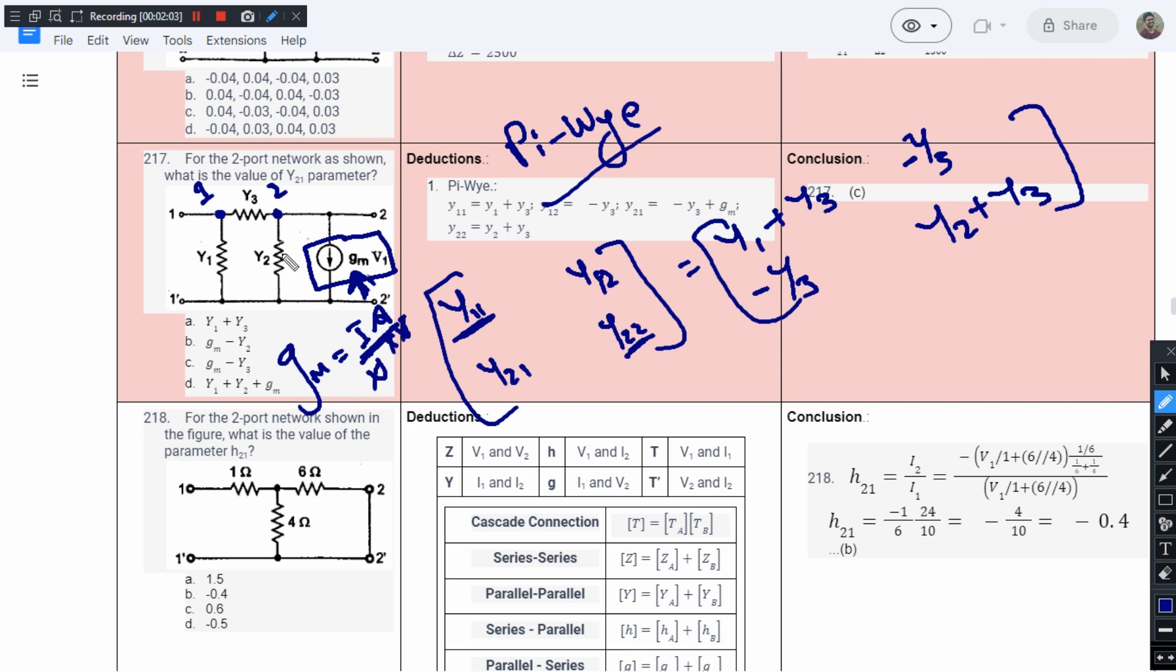Now, this parameter gm will be related to Y21 and not to Y12. As I have already said, you will have to do your own homework and go through the derivations to understand why it is like this.